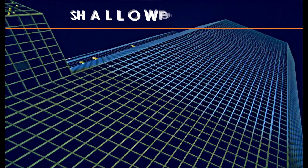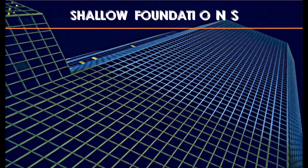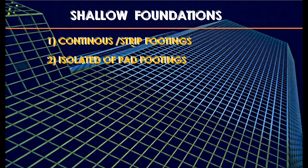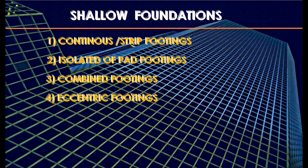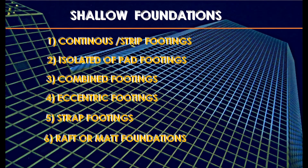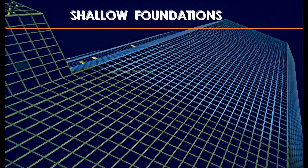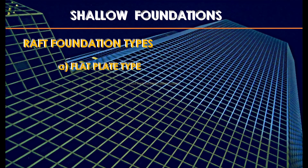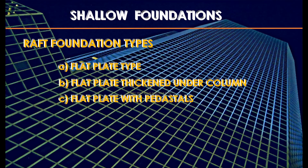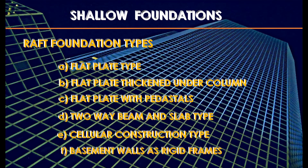Shallow foundations are further divided as follows: 1. Continuous or strip footing — used for load bearing structures. 2. Isolated or pad footing. 3. Combined footing. 4. Eccentric footing. 5. Strap footing. 6. Raft foundation, which is further divided into: A. Flat plate type. B. Flat plate thickened under column. C. Flat plate with pedestals. D. Two-way beam and slab type. E. Cellular construction. F. Basement walls as rigid frame.